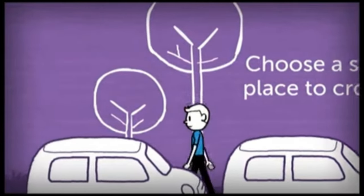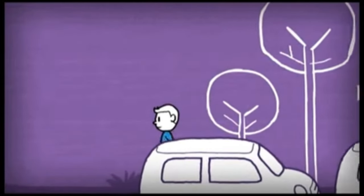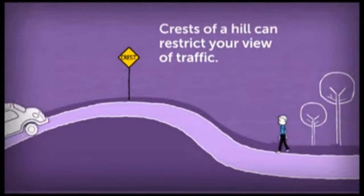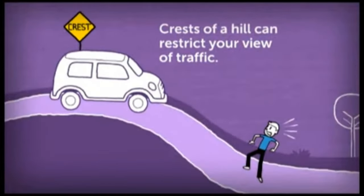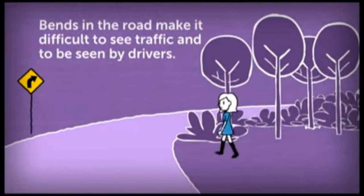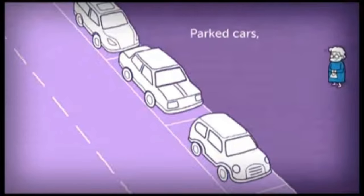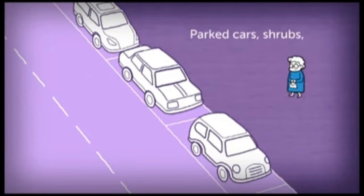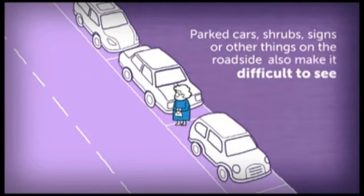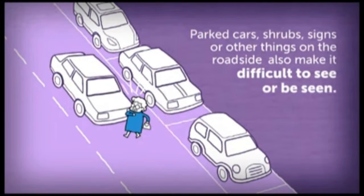Avoid crossing at places with a limited view of approaching traffic. Crests of a hill can restrict your view of traffic. Bends in the road make it difficult to see traffic and to be seen by drivers. Parked cars, shrubs, signs, or other things on the roadside also make it difficult to see or be seen.